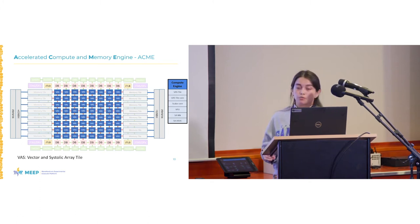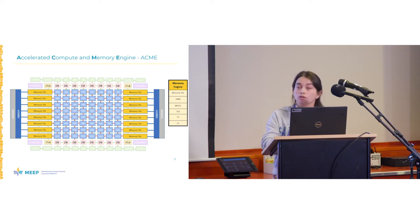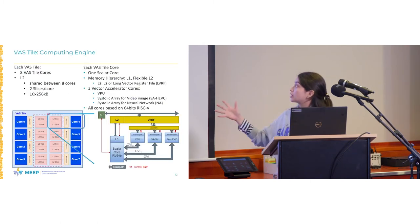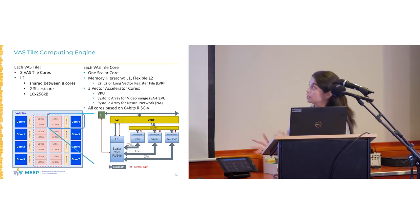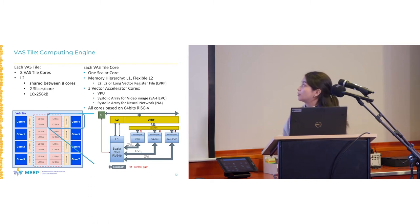We have two different places. The first one is the compute tile — for example, it can handle arithmetic operations. And also, we have the memory tile that handles smart data movement between the architecture. I will start explaining the main elements of the compute tile. The bus tile is the vector and systolic accelerator tile. It is a cluster of eight scalar cores, and each core has several coprocessors. The first one is the vector processor unit. The second is the systolic array for video and image. And the last one is the systolic array for neural networks.